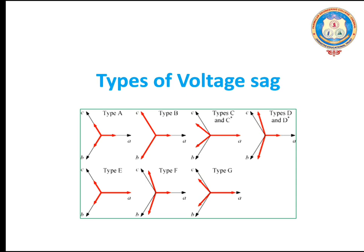In type A, all the phases are in phase and voltage sag occurs in all the phases. In type B, voltage sag occurs in one phase and there is no phase shift. In type C, voltage sag occurs in two phases. In type D, voltage sag occurs and the voltage phase shift occurs in two phases. In type E, voltage sag occurs in two phases but there is no phase shift. In type F, voltage sag occurs in one phase and there are two phase shifts. In type G, voltage sag occurs in two phases and two phase shifts occur.